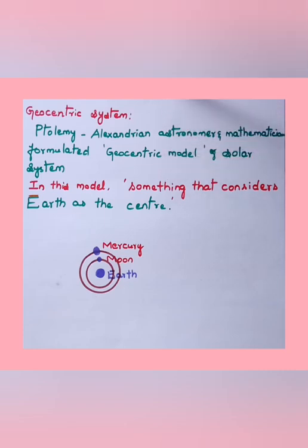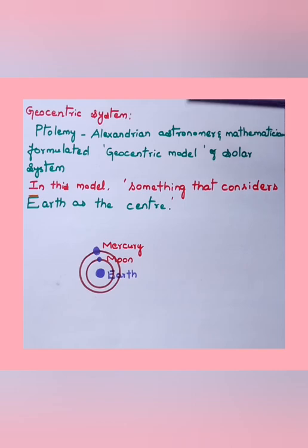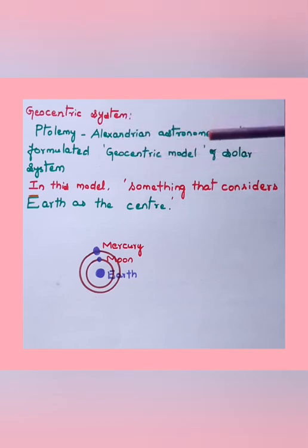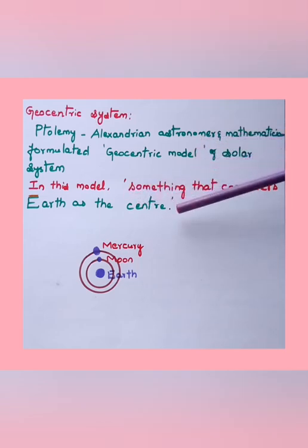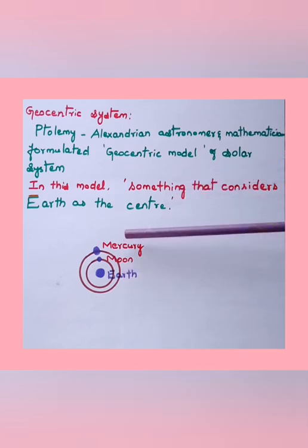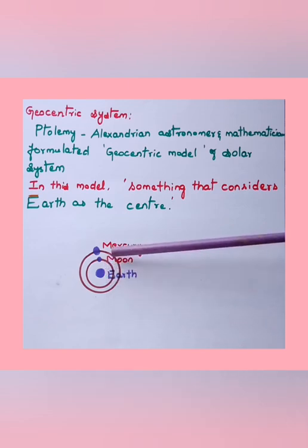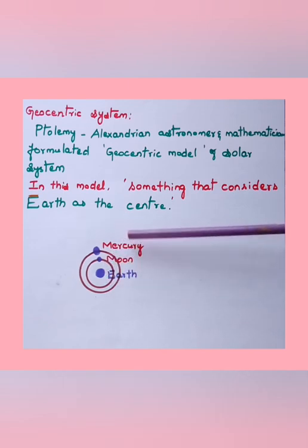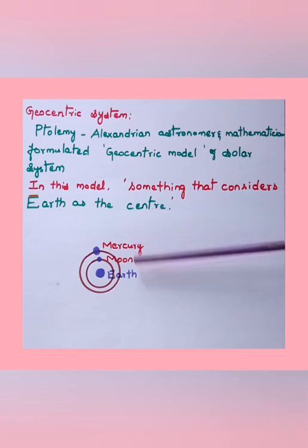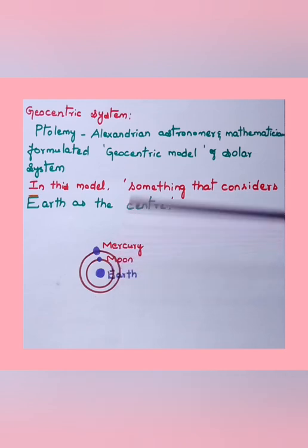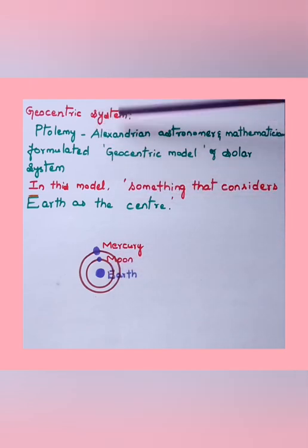The geocentric system was put forward by mathematician and astronomer Ptolemy, an Alexandrian astronomer. He formulated the geocentric model of the solar system. In this model, the earth is considered at the center, and the moon, Mercury, even including the sun and other planets, are considered to revolve around the earth. 'Geo' means earth, hence this system is called the geocentric system.